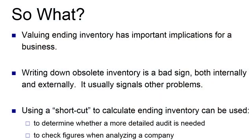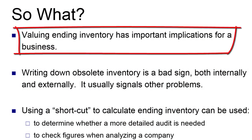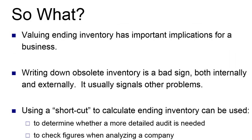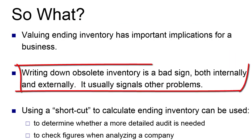First and foremost, we care about these issues for the same reason we cared about the rest of inventory. The valuation of inventory and cost of goods sold are really the biggest parts of why most companies are in business. They make a product and sell it, or they buy multiple products and sell them to consumers. If they can't keep track of that accurately, then nothing else really matters. So valuing inventory and cost of goods sold in any way is an important part of our business.